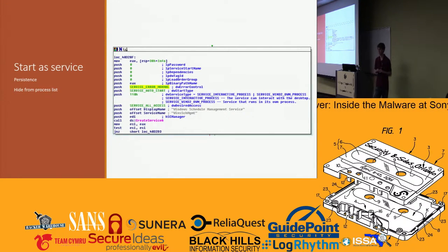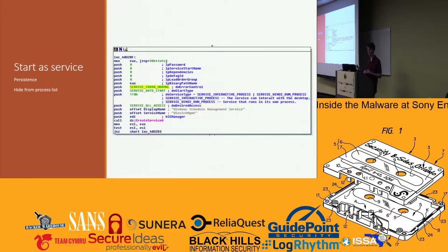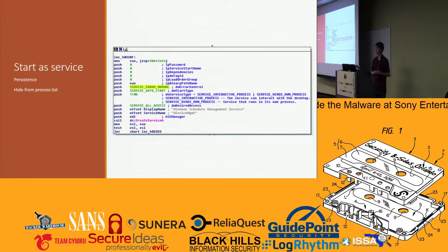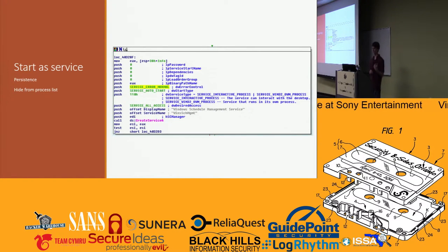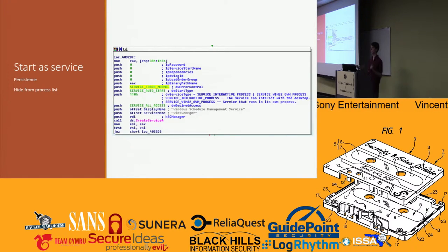One of the things the malware sample does, if you look at the assembly, is it installs itself as a service. One reason malware might want to install itself as a service is to become persistent — say the computer reboots and you want it to keep running. You can also hide from the process list by installing as a service.